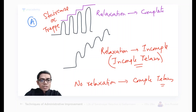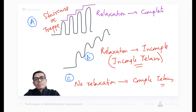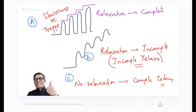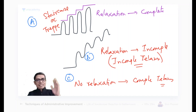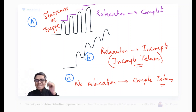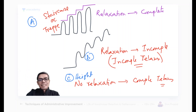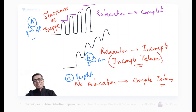Now if I give options A, B, and C — the question is: highest frequency is required for which one? The answer is complete tetanus requires the highest frequency, then incomplete tetanus requires the second highest frequency, and staircase/treppe requires the third. Maximum to minimum: complete tetanus, then incomplete tetanus, then staircase phenomena.